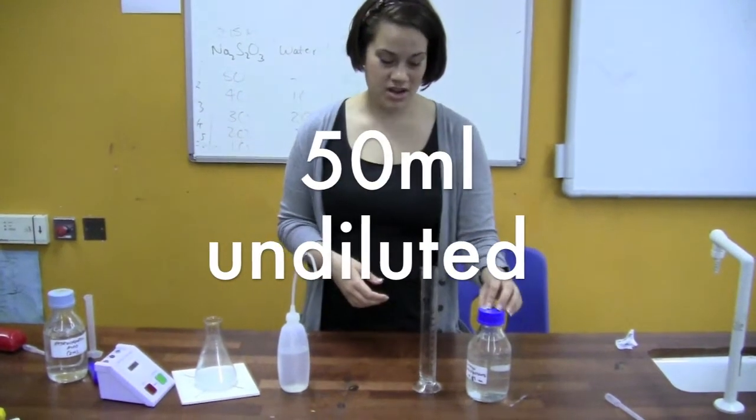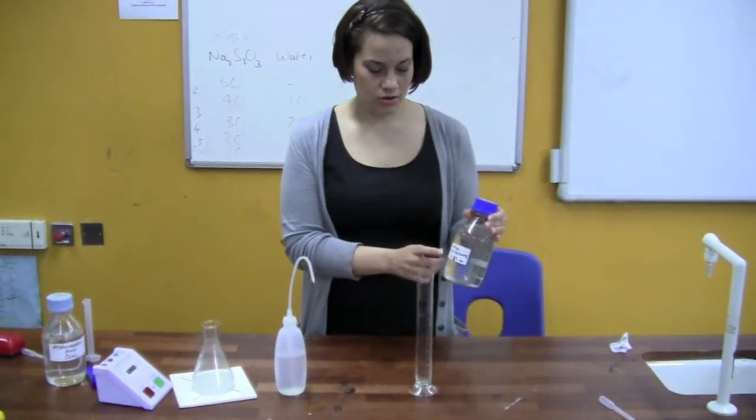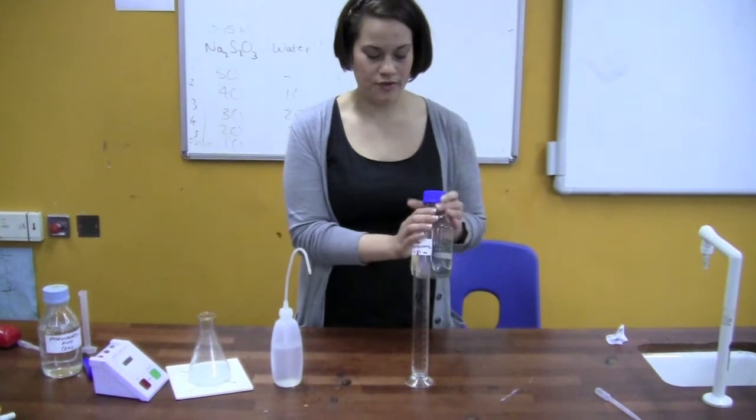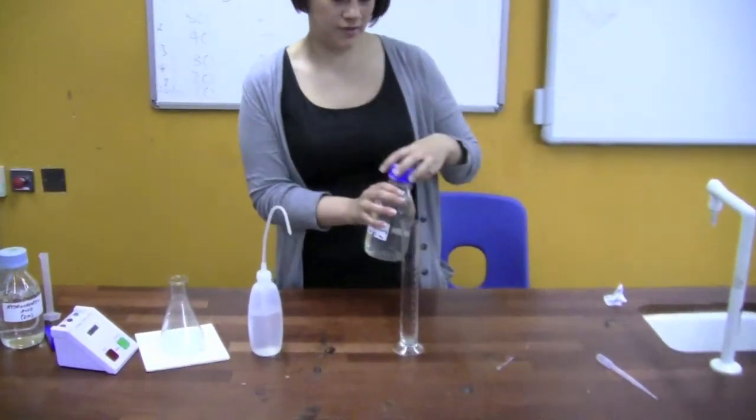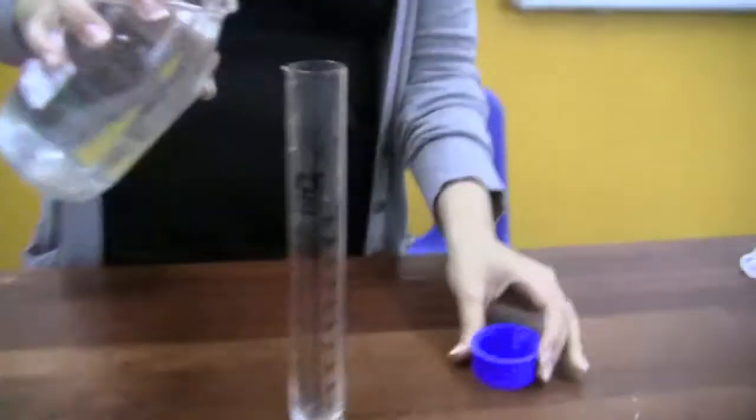For the first concentration, we need 50 ml of the 0.15 molar sodium thiosulfate. So I'm going to start by pouring this in.